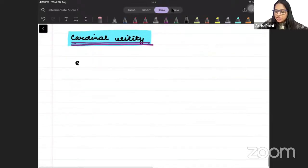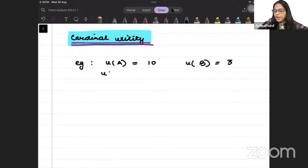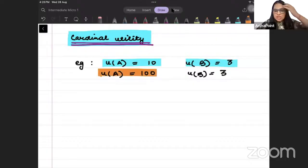So, cardinal utility says that when I get a utility of 100 from bundle A and 3 from bundle B, these are two different things. It is giving importance to magnitude also. But ordinal utility says that in both cases, A is more than B and that is it. I am only concerned with the ranking of the bundle. I am not concerned with the magnitude I assign to the utilities.